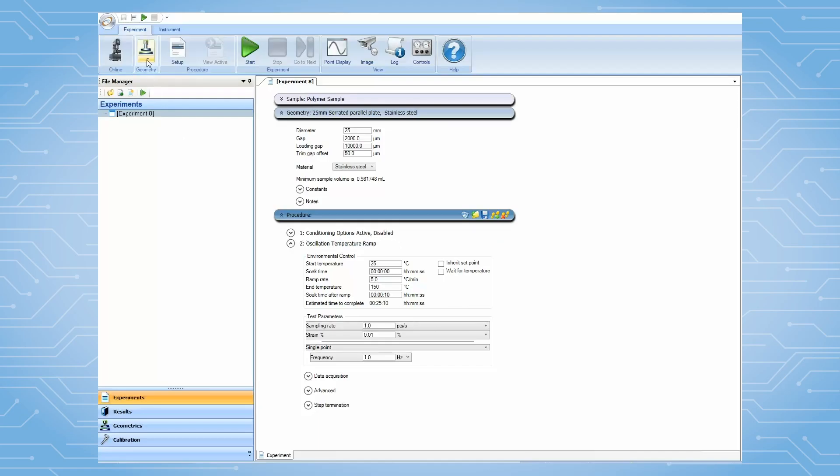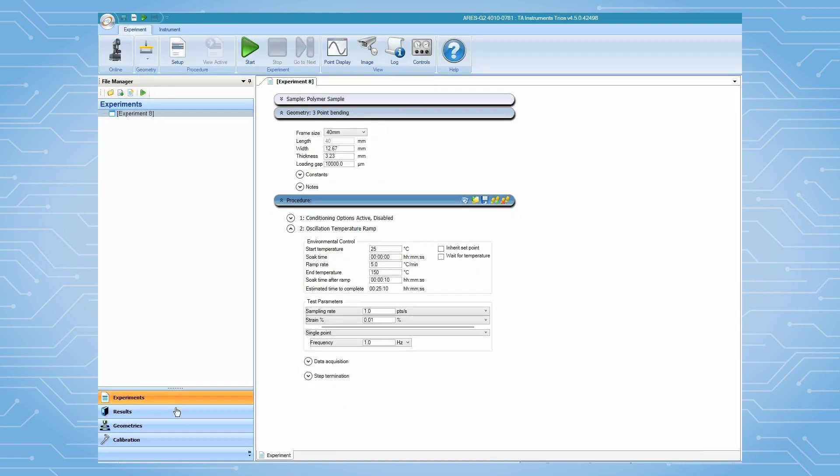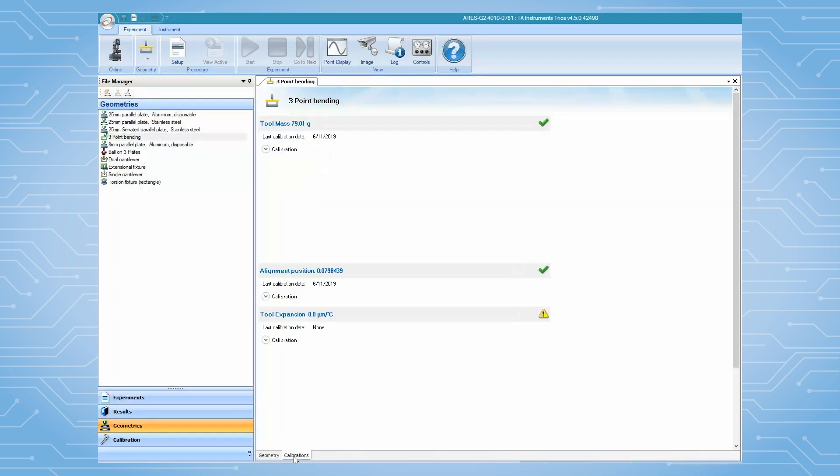From TRIO software, select the three-point bending from the geometry drop-down menu, then proceed to the clamp calibration.